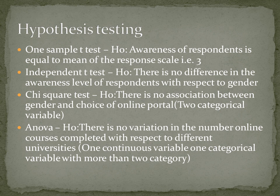T-test is used when there is a continuous variable — awareness score was a continuous variable. Chi-square test is used when there are two categorical variables. We are comparing gender and choice of online portals — whether they are using Udemy, Coursera, SWAYAM, etc. — so these two variables can be compared using a chi-square test.